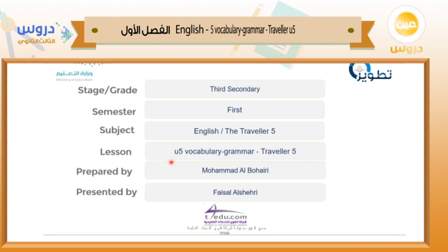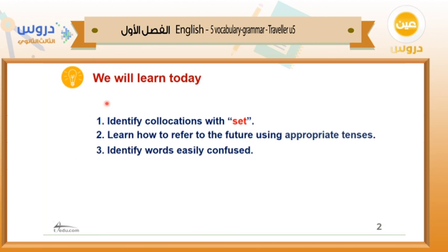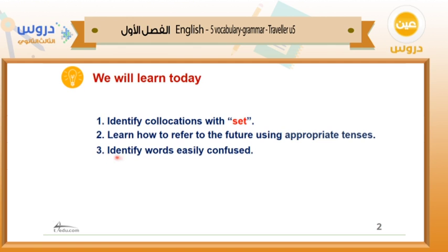Welcome every student to this new lesson. Today we have vocabulary and grammar. The name of the course is Traveler 5, from Unit 5. We are in the first semester and targeting the third secondary stage. What we will learn today: number one, identify collocations with the word 'set'; number two, learn how to refer to the future using appropriate tenses; and number three, identify words easily confused.